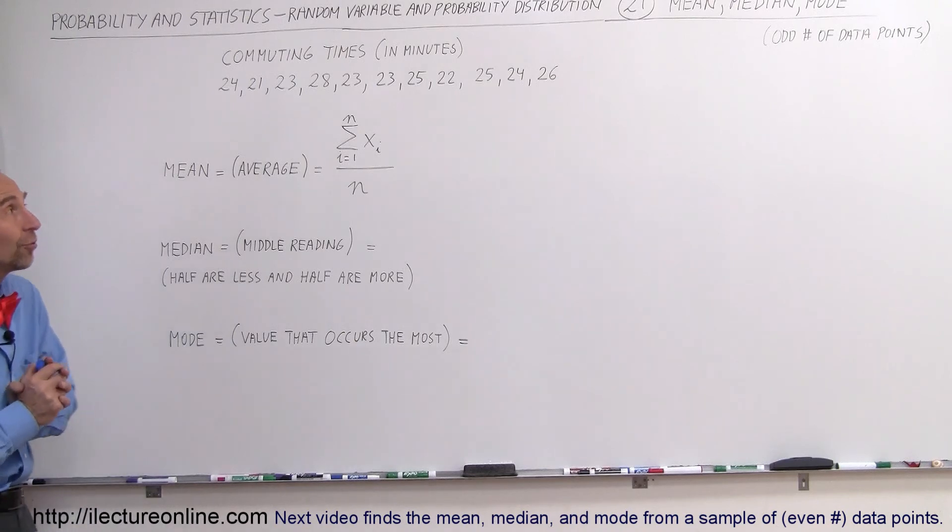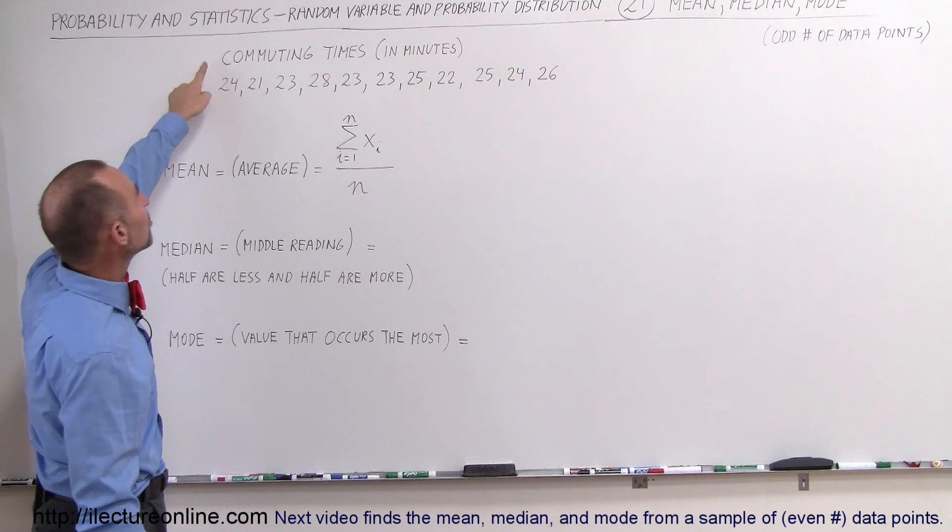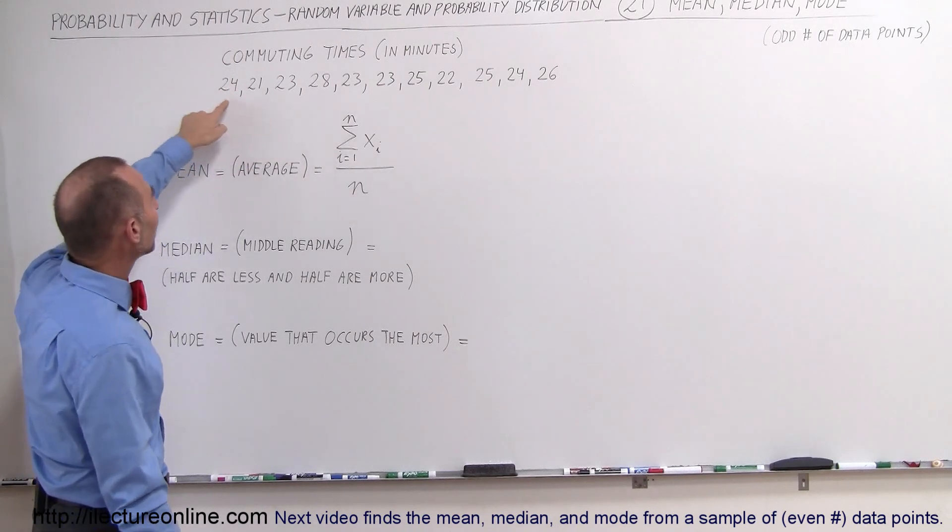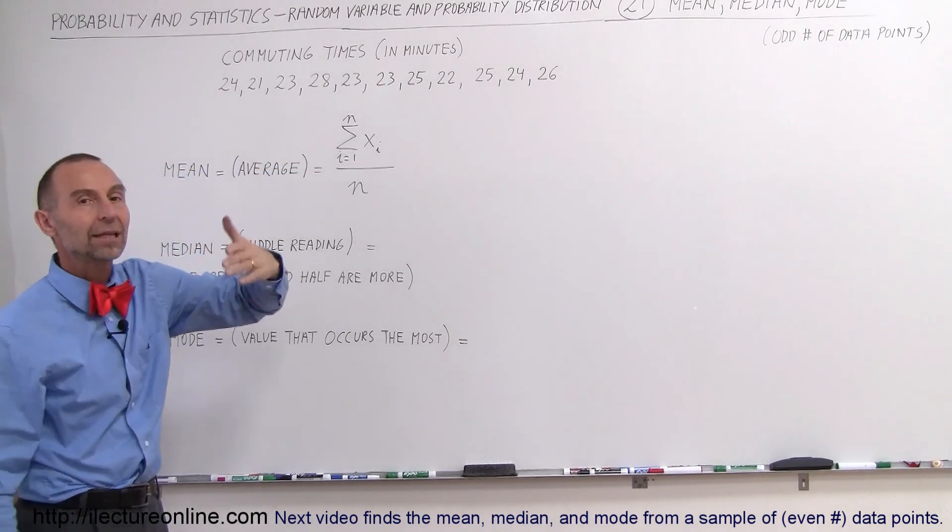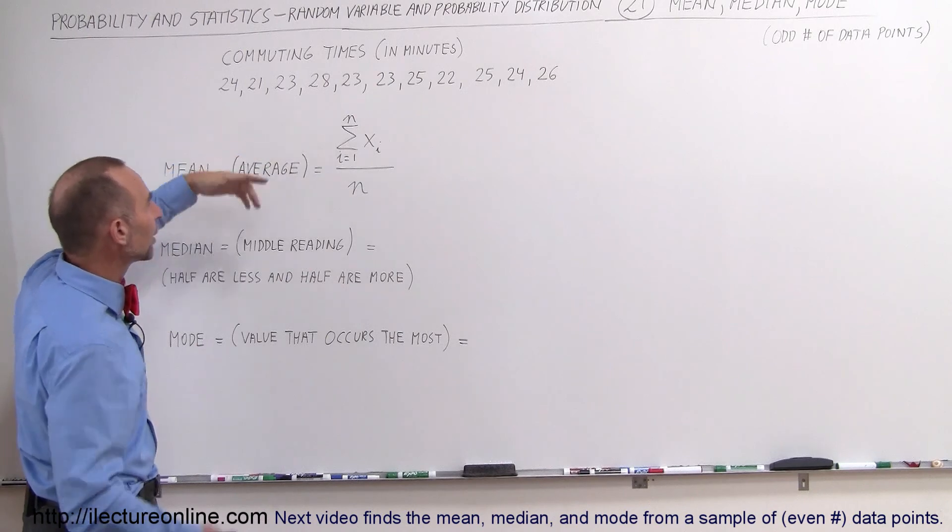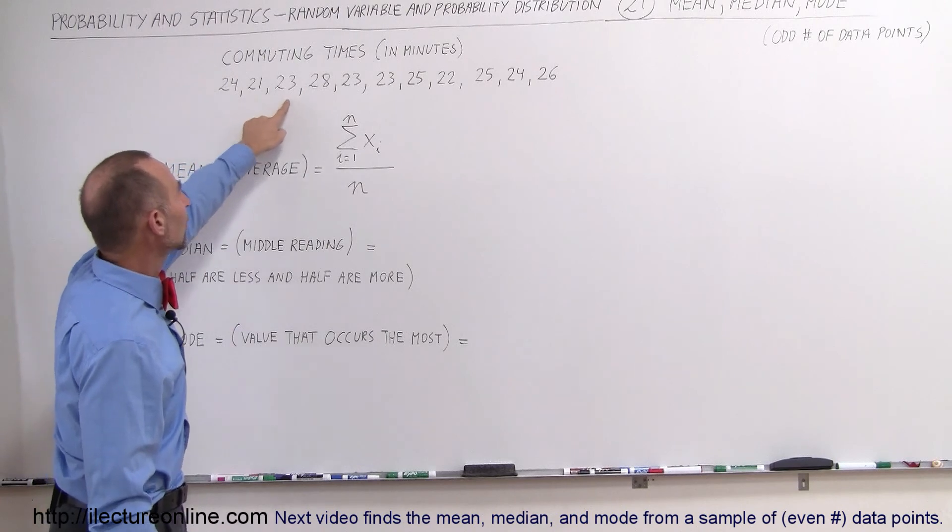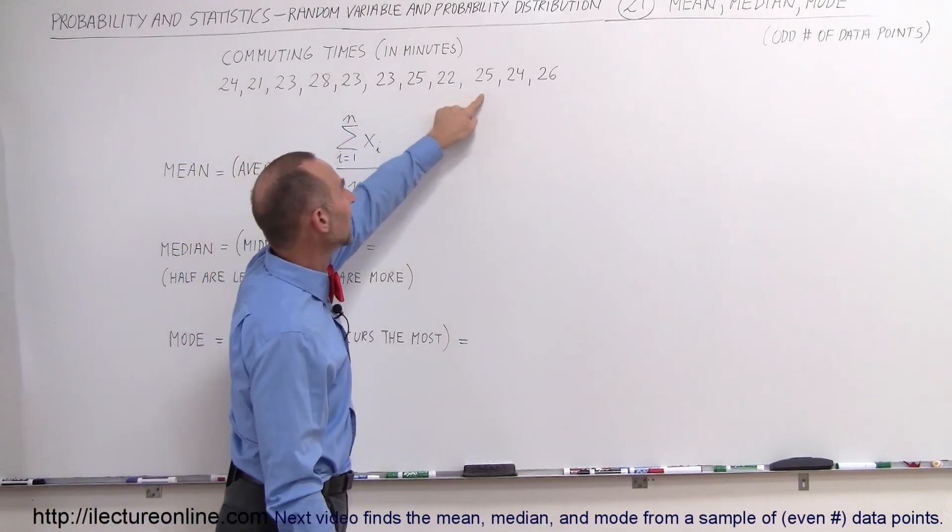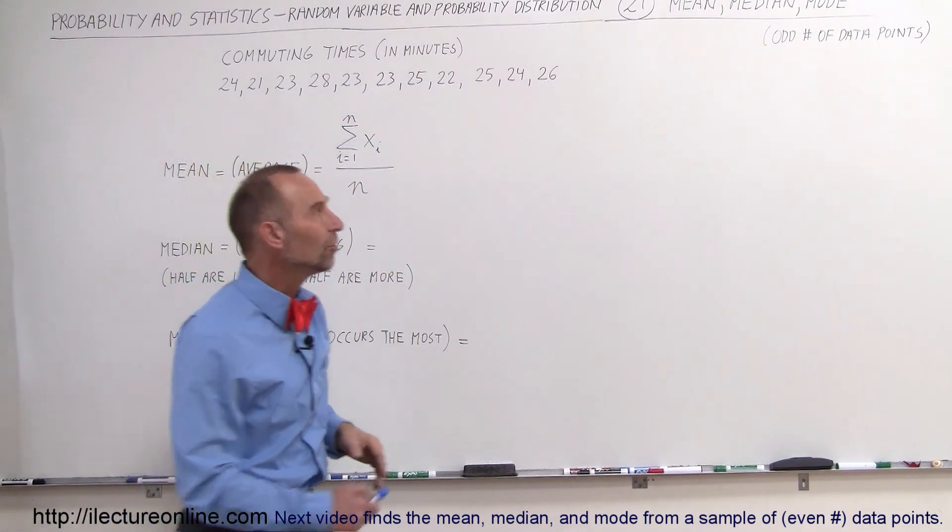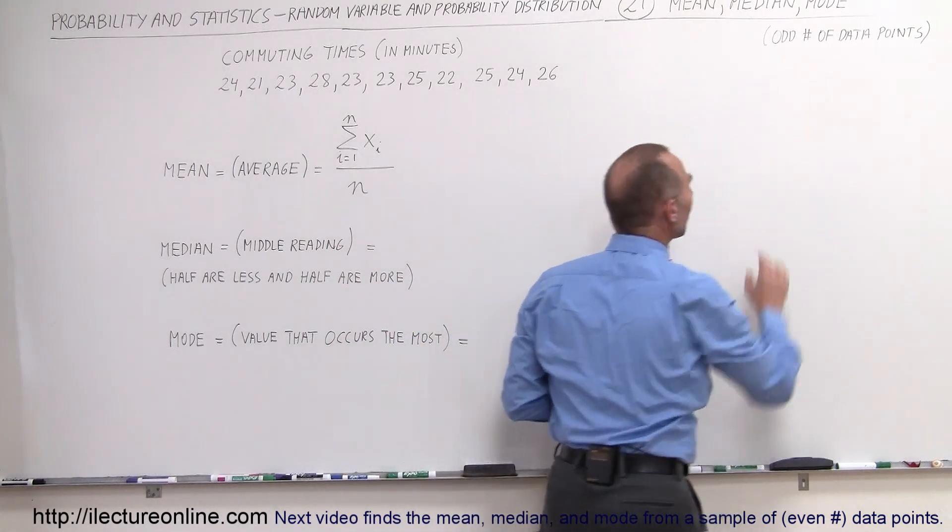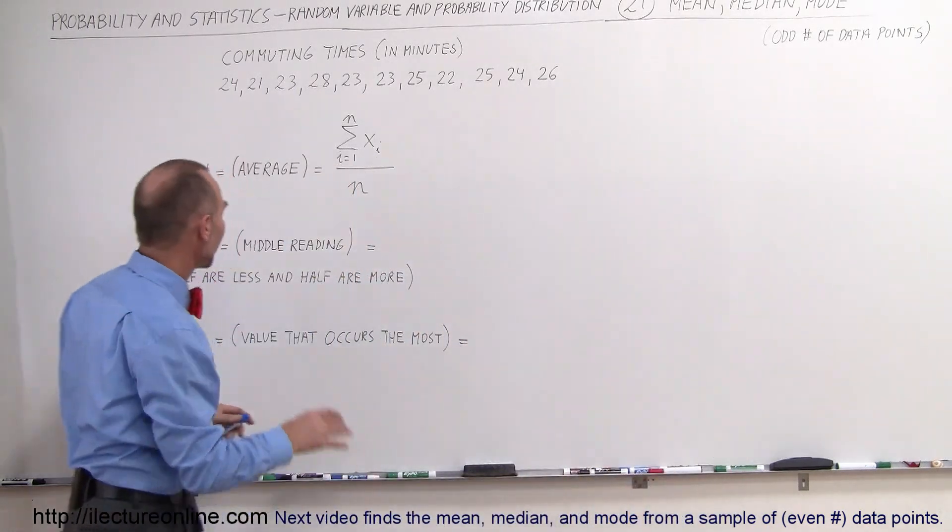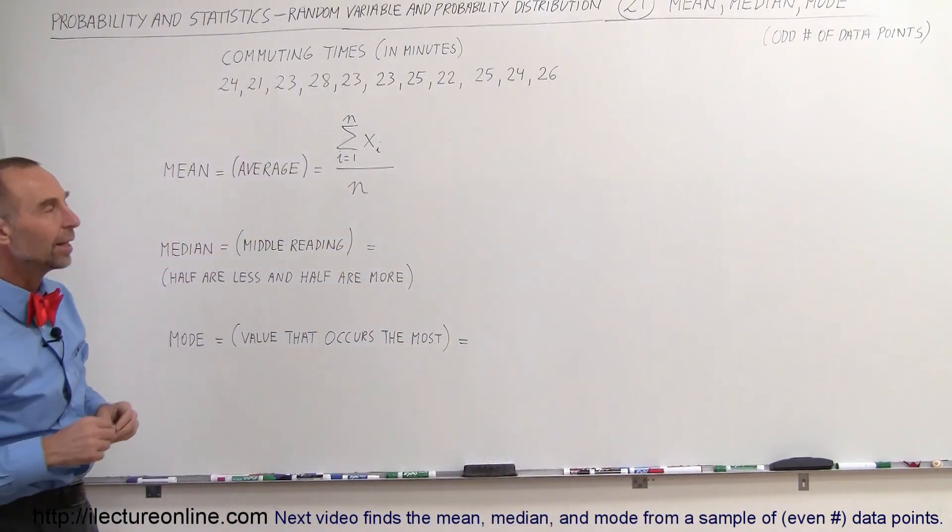Alright, so let's first start out with the data points that we have. Notice they represent commuting times in minutes and see that from day to day the amount of time it takes somebody to get to work will vary depending upon the traffic conditions, the lights, and so forth. Let's say that we have 1, 2, 3, 4, 5, 6, 7, 8, 9, 10, 11 data points, meaning we have an odd number of data points which makes it easier to find the median and we'll see in just a moment why that is.